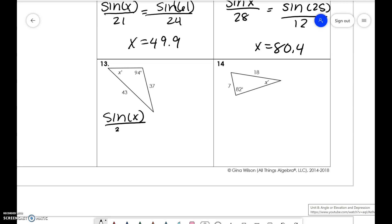37 times sine of 43 divided by 94, take sine inverse, you get x to be 59.1.